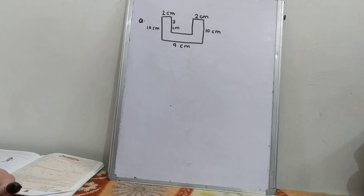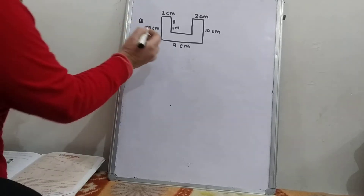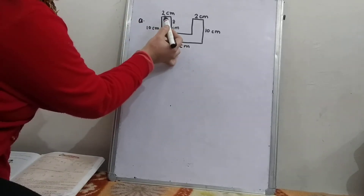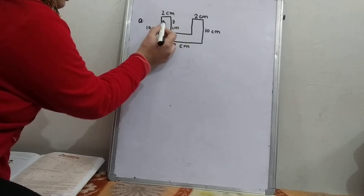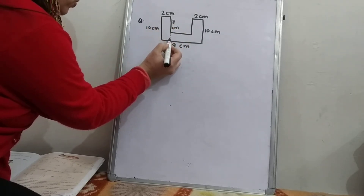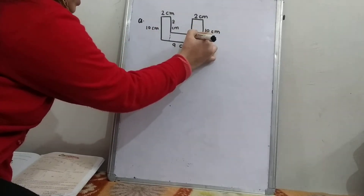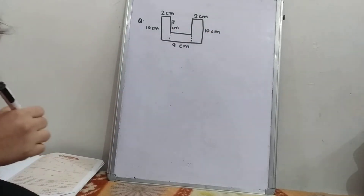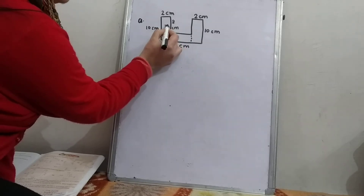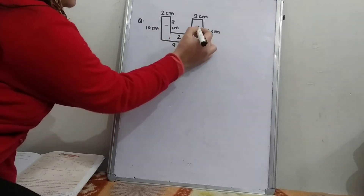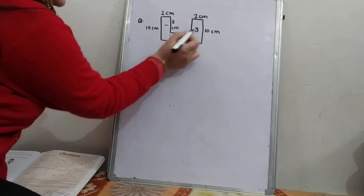Question 2. Find the area of the given figure. As we can see, this is an irregular figure. It consists of rectangles. If I draw a dotted line here it becomes one rectangle, and the same I can make one rectangle here by drawing one line. So basically I have three rectangles: first rectangle, second rectangle, and third rectangle. So I have to find the area of all these three rectangles.